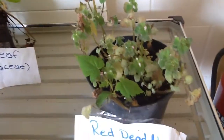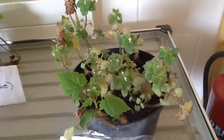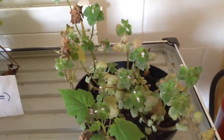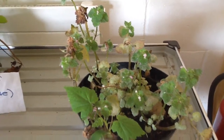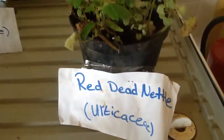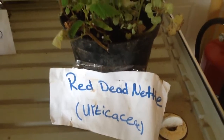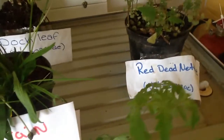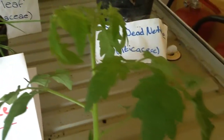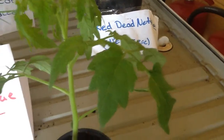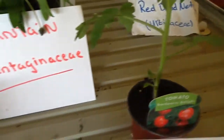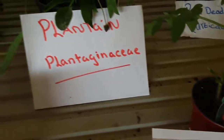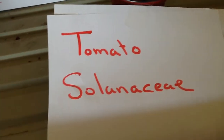Then we have another Nettle family. It's called the Red Dead Nettle, and we know it's a Nettle because of the square stem. That's from the family Lamiaceae. Then we have the Tomato, and that's from the family Solanaceae, the same as the Potato.